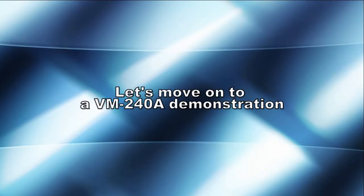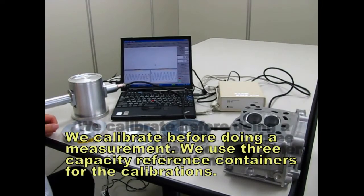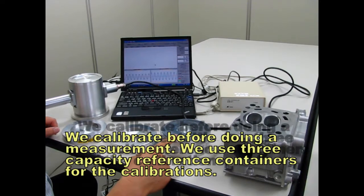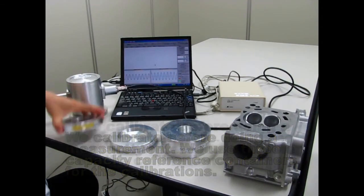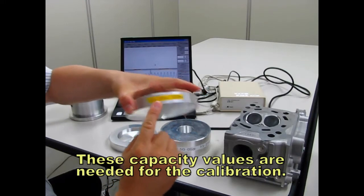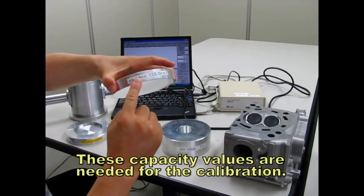Let's move on to a VM240A demonstration. We calibrate before doing a measurement. We use three capacity reference containers for the calibrations. These capacity values are needed for the calibration.